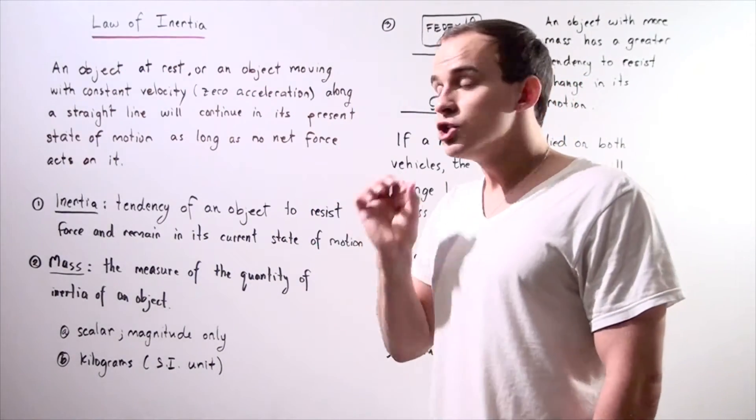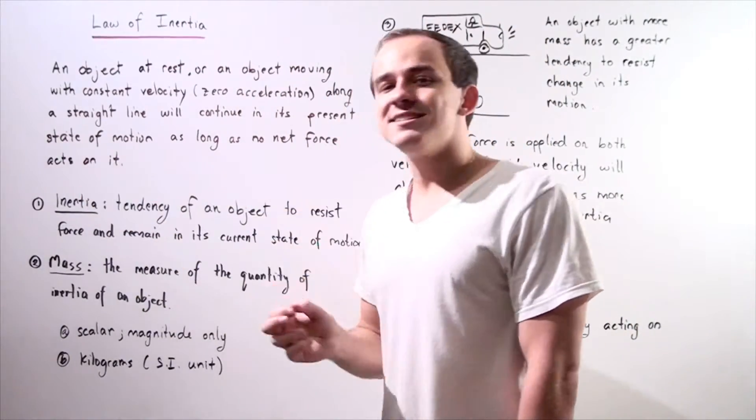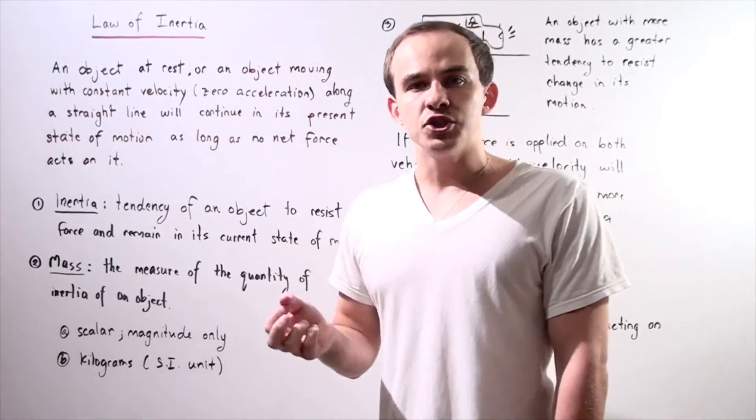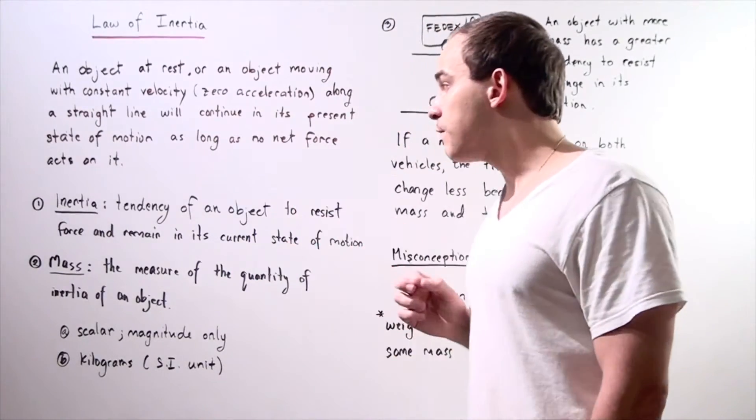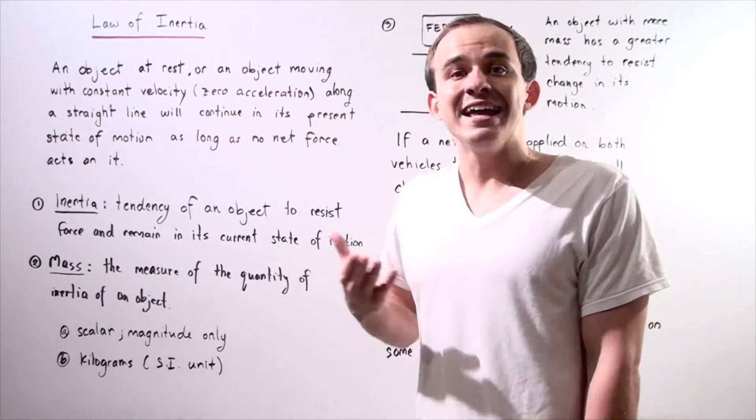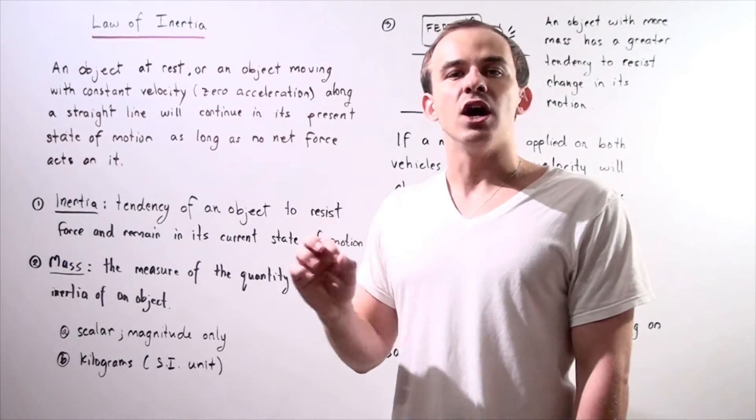But how exactly should we define inertia? Inertia is the tendency of an object to resist a force, to resist a net force. Therefore, inertia is the tendency of an object to remain in its current state of motion.